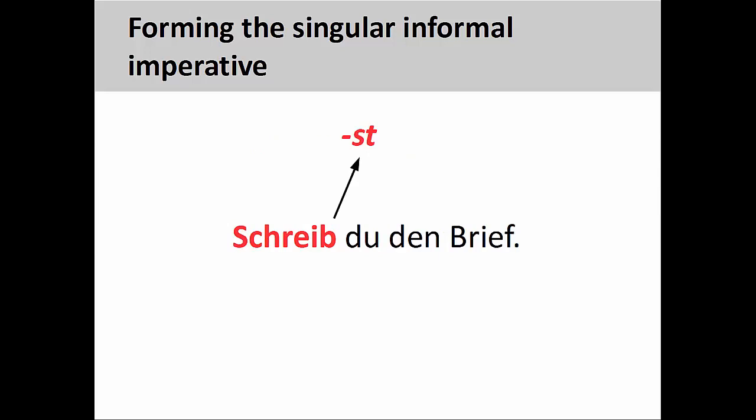First, move the verb to the first position and drop the st ending, which is the second person singular ending. Once this is done, you remove the second person singular personal pronoun du from the sentence and add an exclamation point. These steps produce the command 'schreib den Brief,' 'write the letter.'